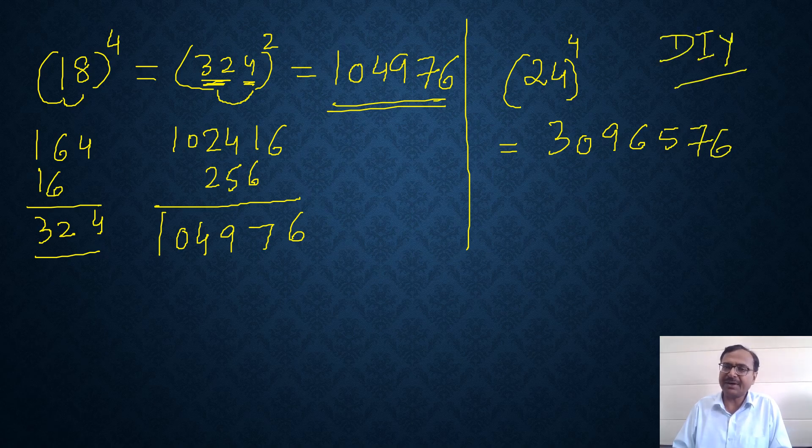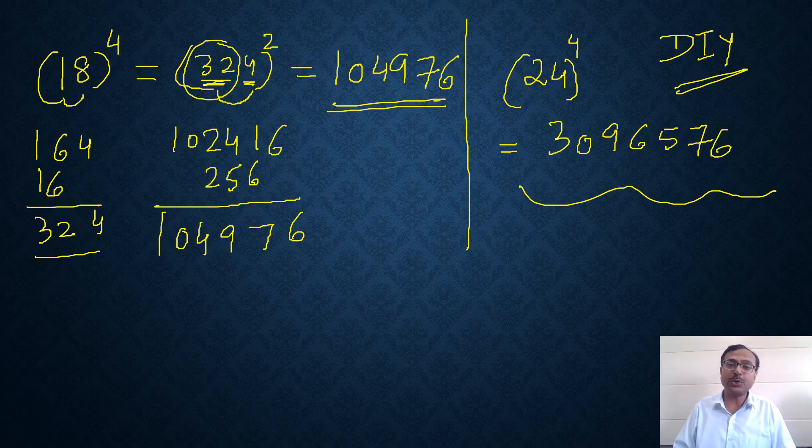Now this I will leave to you as a DIY question. I have already told you how to square numbers, two digit numbers. So you can square two digit numbers. If you don't know the square of 32, you can do it using that method, so it will be easier for you to get to the answer.